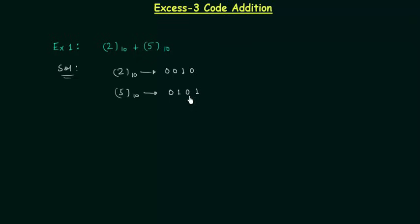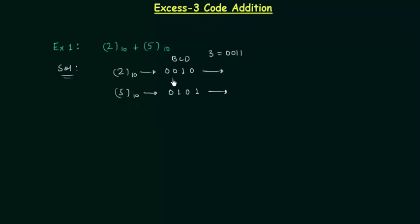We have already done this in previous lectures. Now we will add 3 to obtain the XS3 code for 2 and 5. If you remember from the last presentation, we converted the decimal number to BCD, and then we add 3 to obtain XS3 code. So if you add 3, which is 0011, to 0010 we get 0101 — this is the XS3 code for 2. In the same way we will have 1000 as the XS3 code for 5.